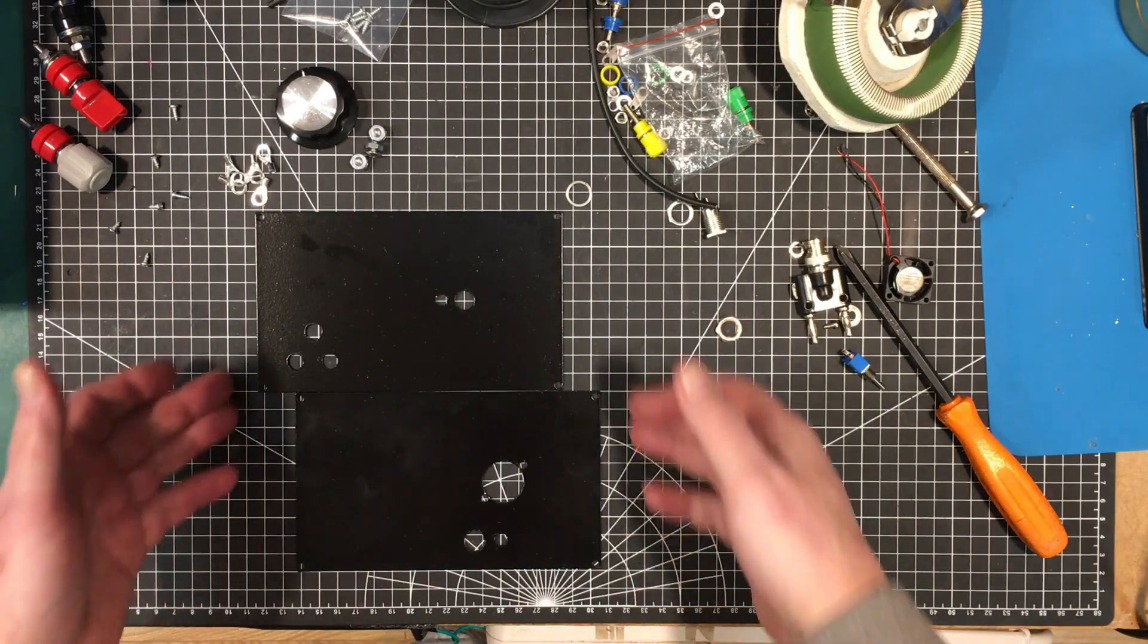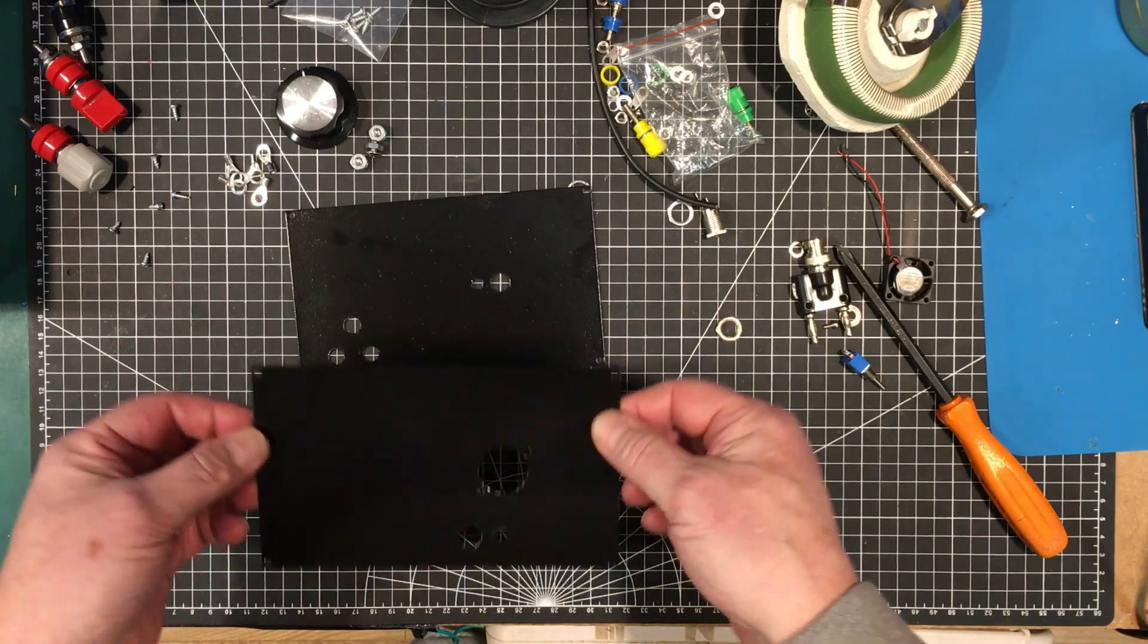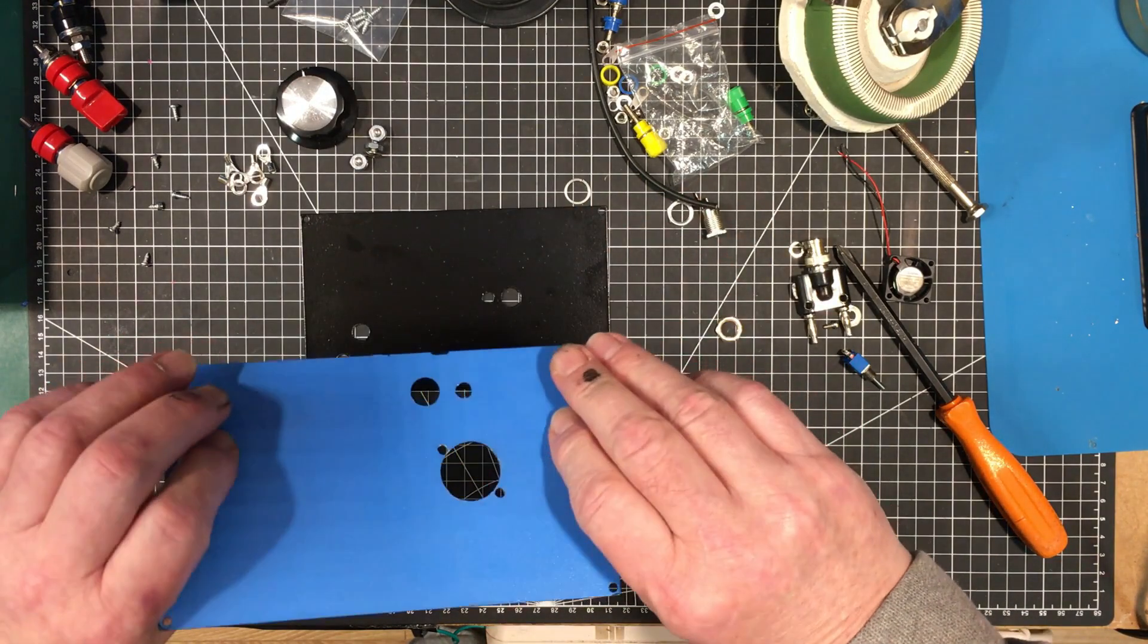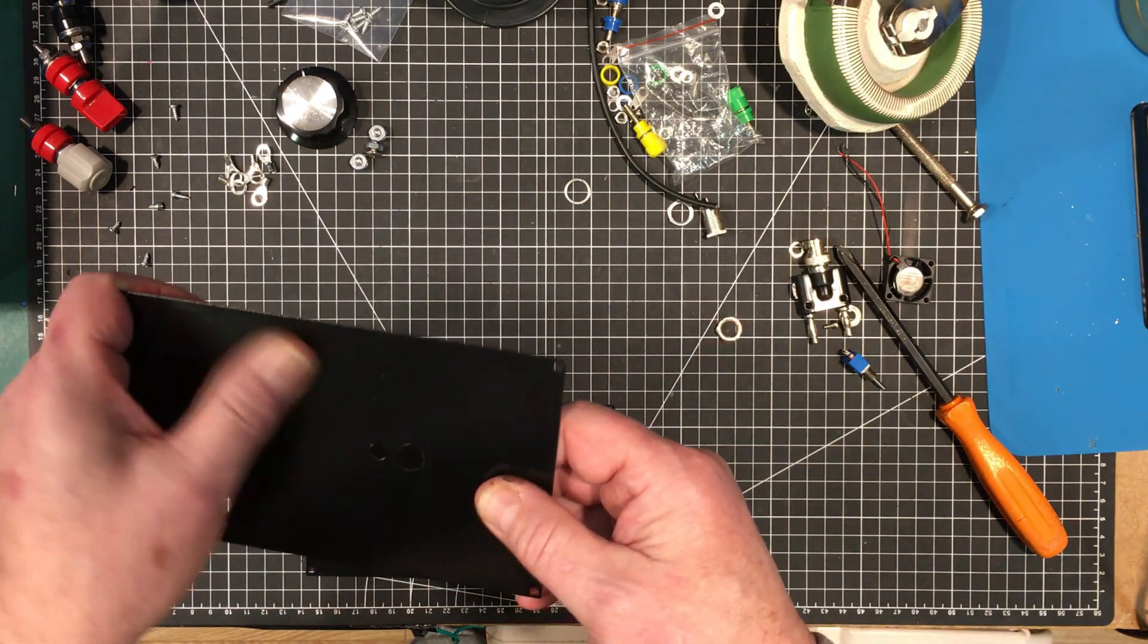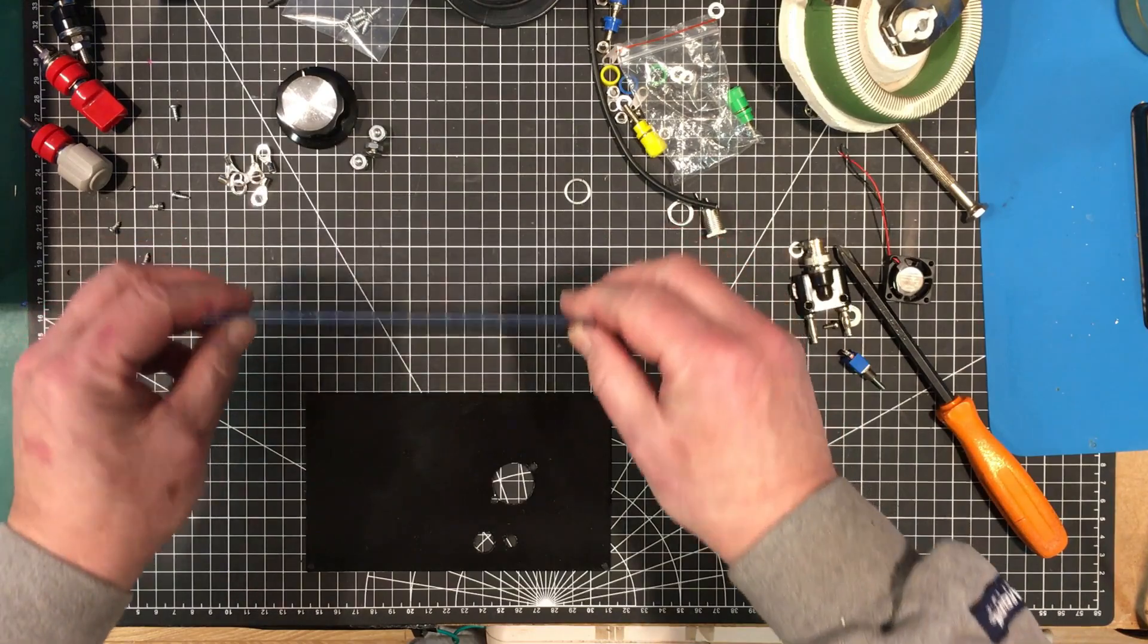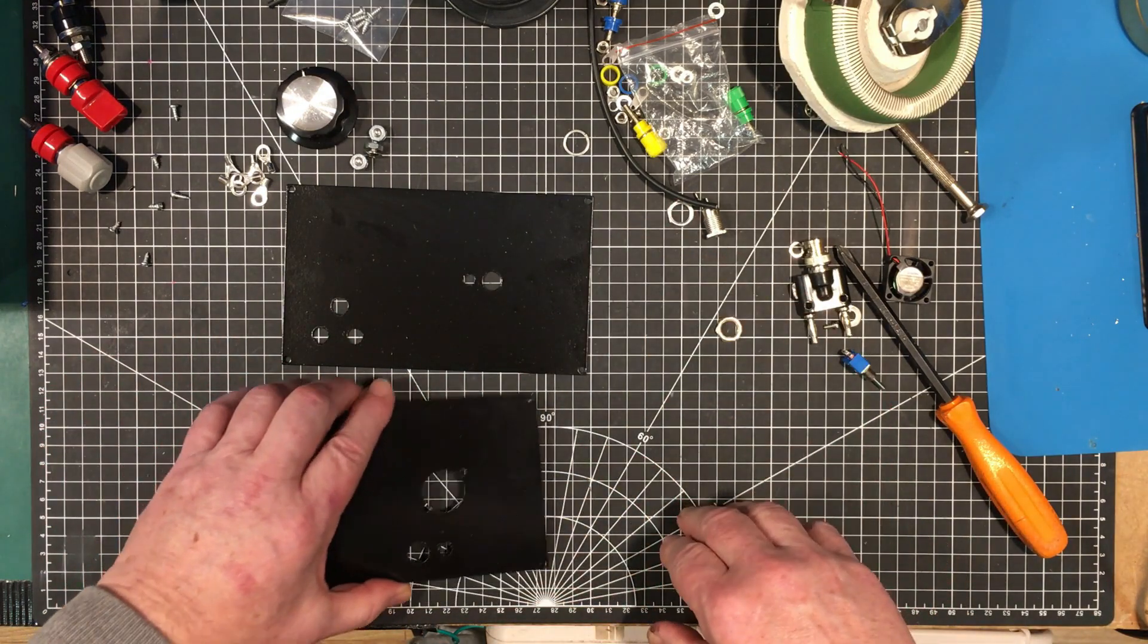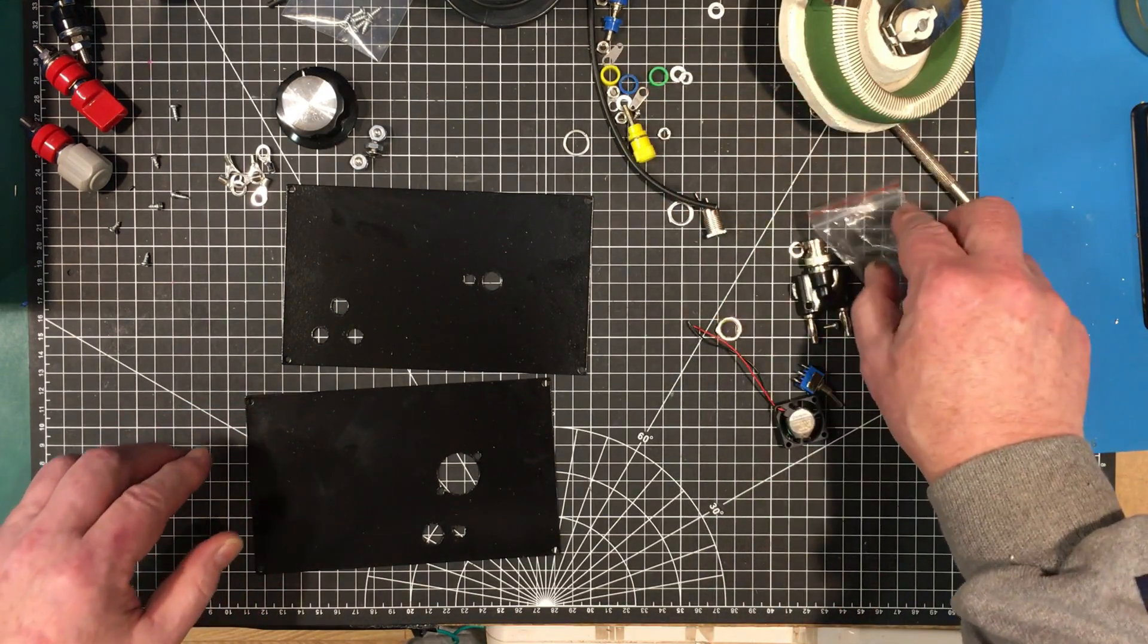I've got all my holes drilled, this is the front panel and the back panel. I painted them black with some enamel and then put them in the oven for about an hour at 225 degrees to bake them. Now I just have to wire them up.